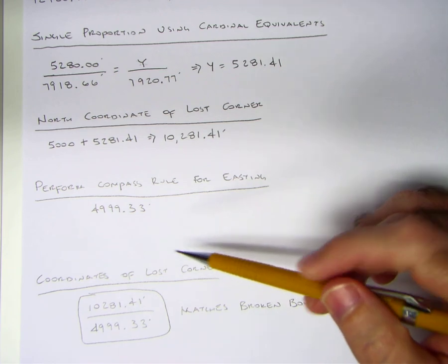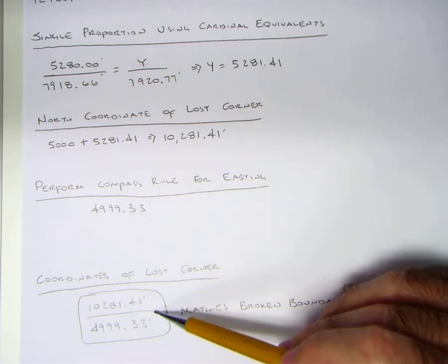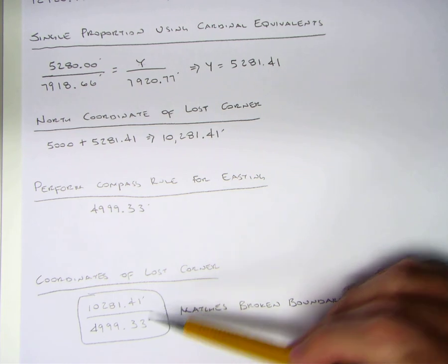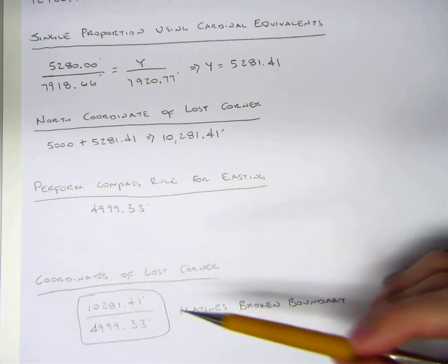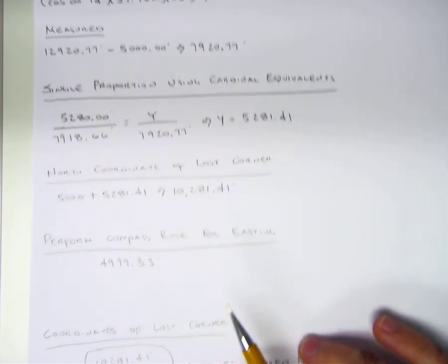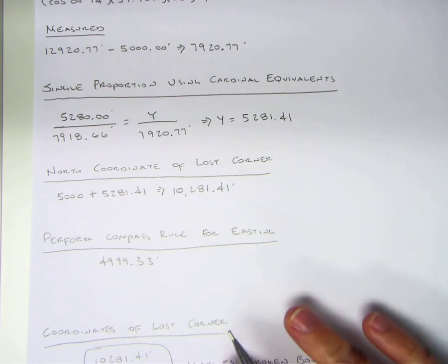When you look, the coordinates doing it using a regular boundary matches that that we did using a broken boundary or compass rule, however you want to call it. That's the way you're doing a regular boundary.